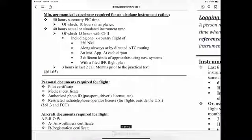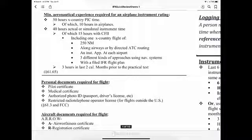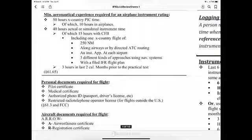Minimum aeronautical experience required for an airplane instrument rating under Part 61.65: 50 hours of cross-country PIC time, of which 10 hours must be in airplanes. 40 hours of actual instrument time, of which 15 hours must be with a CFII, including one cross-country flight of 250 nautical miles along airways or as directed by ATC routing.